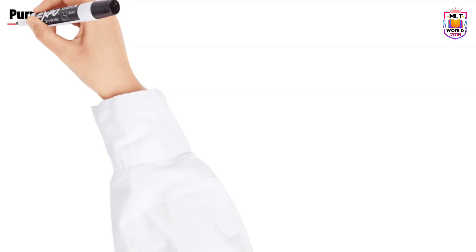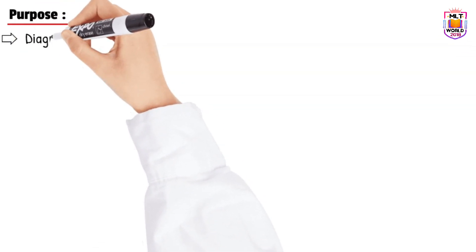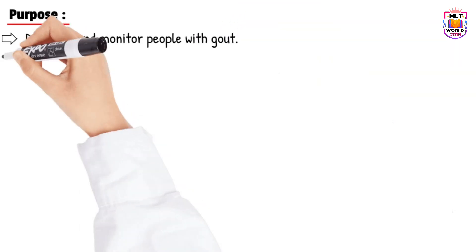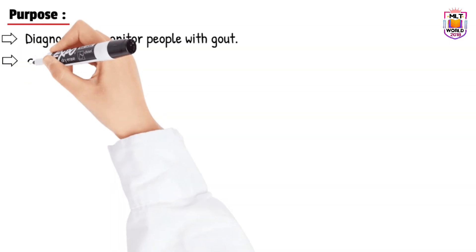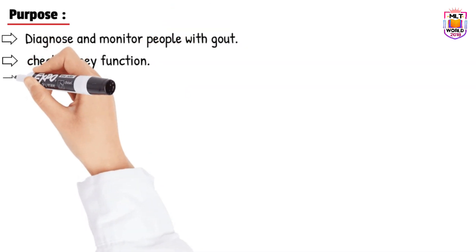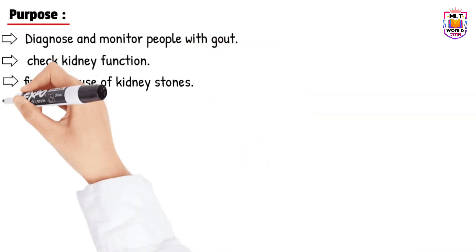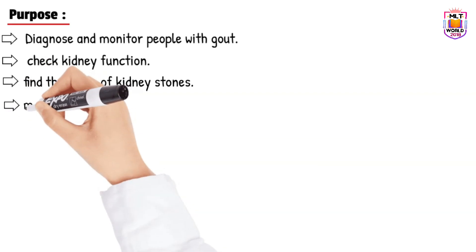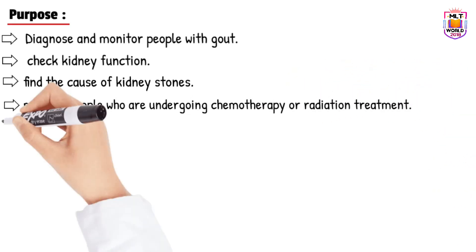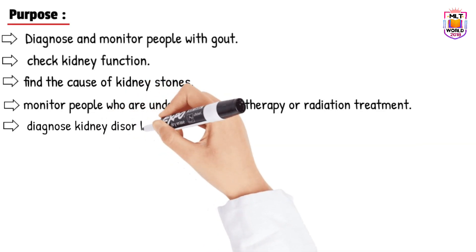Uric acid is a waste product produced from purines. The purposes of testing it in the lab are: first, to diagnose and monitor people with gout; second, to check kidney function — routine kidney function tests also include uric acid — and to find out the cause of kidney stones; and also to monitor people undergoing chemotherapy or radiotherapy and to diagnose kidney disorders.